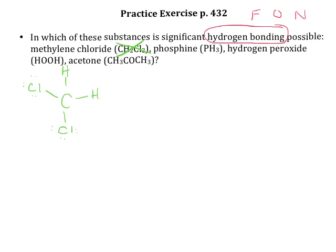We're going to see something similar with phosphine. There are eight valence electrons for phosphine, and again, even though there are hydrogen atoms, they are not attached to fluorine, oxygen, or nitrogen, so no significant hydrogen bonding is possible there.